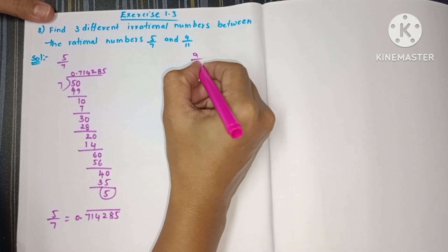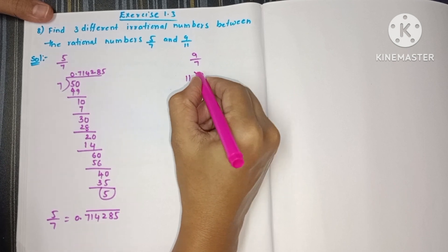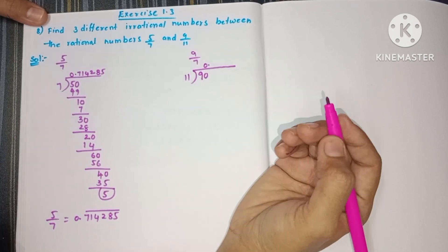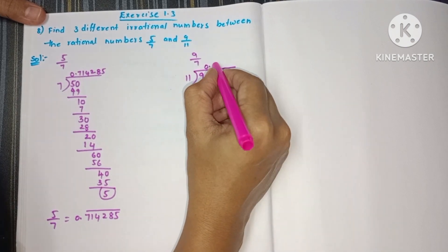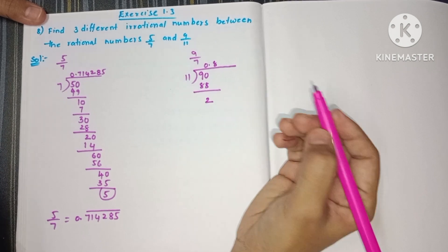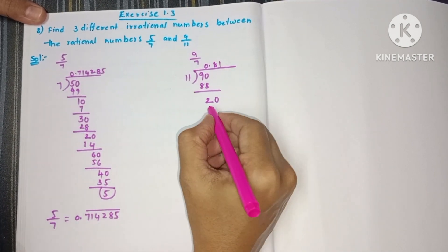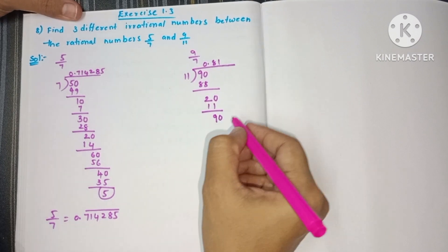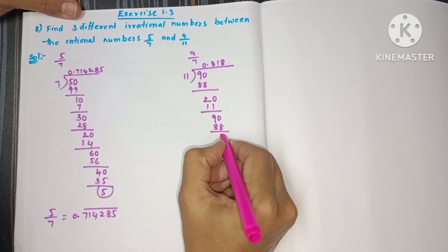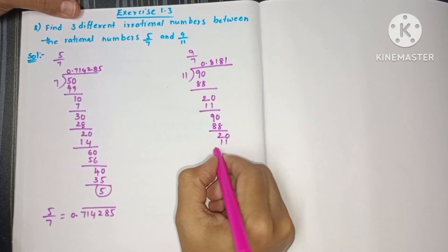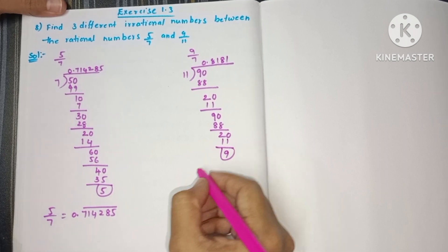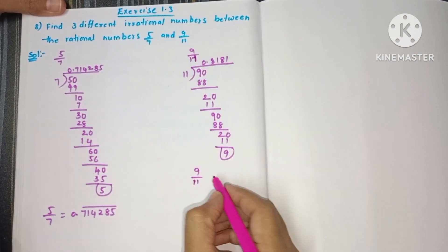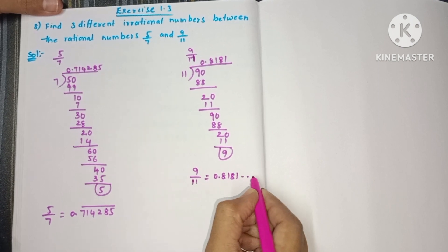Next, 9 by 11. We divide 9 by 11 using long division: 11 times 8 is 88, and the pattern repeats. So 9 by 11 equals 0.8181 and so on.